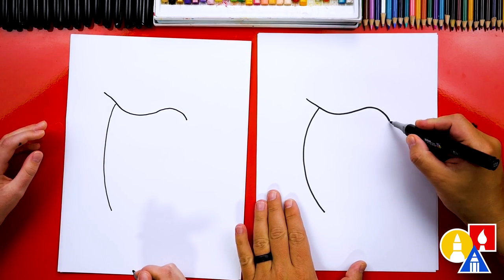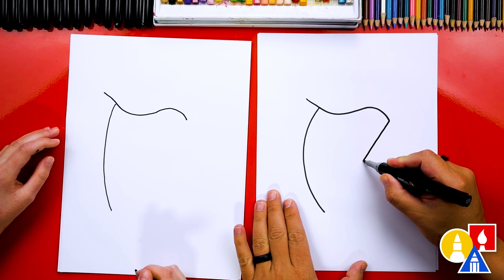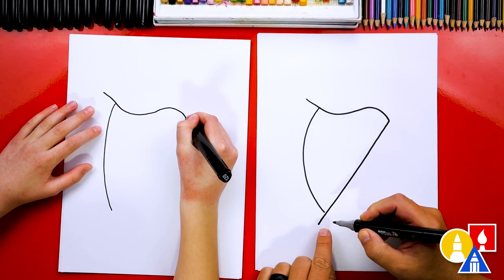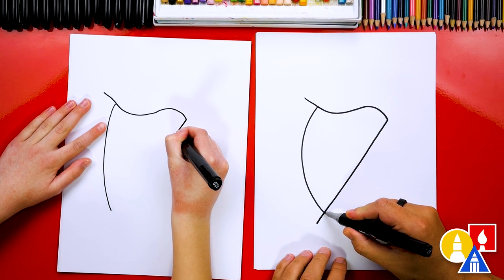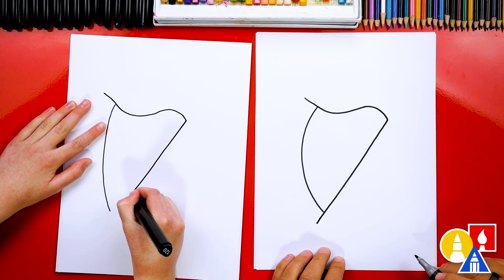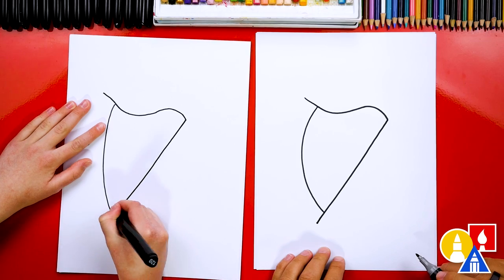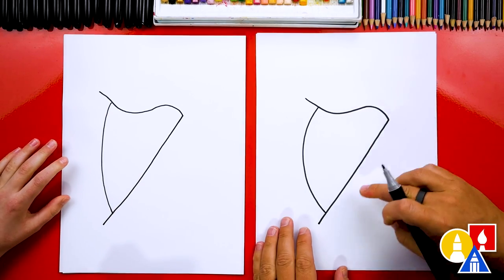And then on this side, we're going to draw a diagonal line that just comes straight down to the left and connects here. This is the inside shape of our harp.